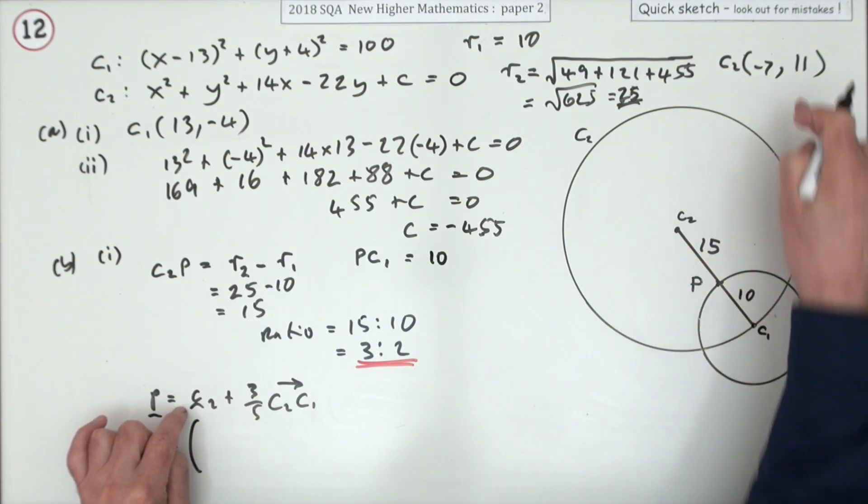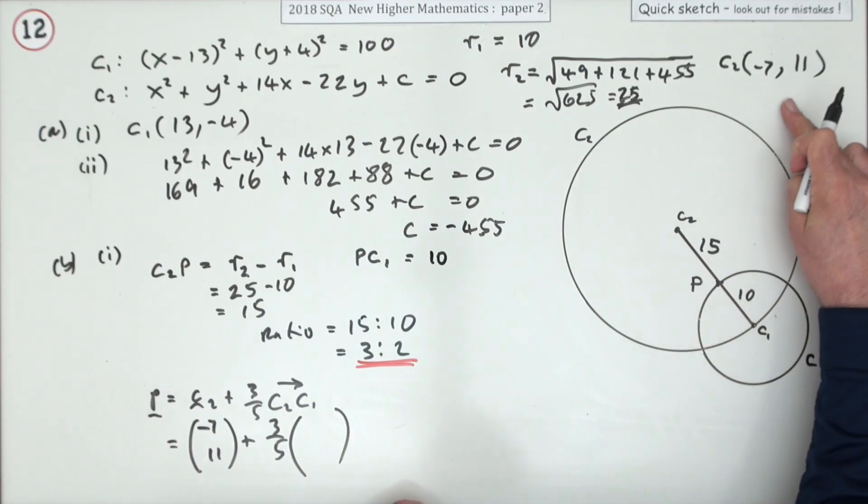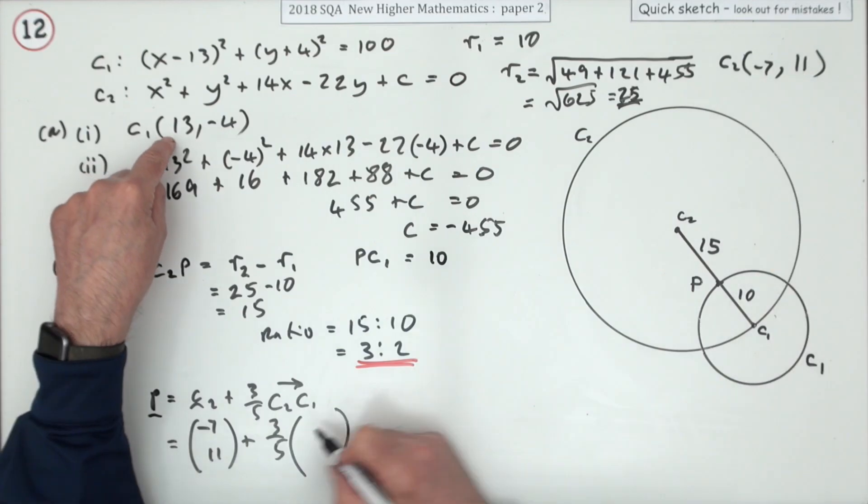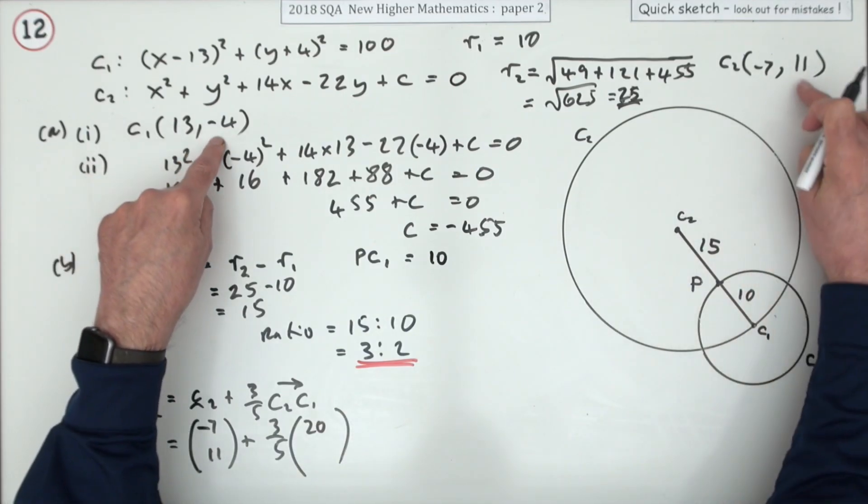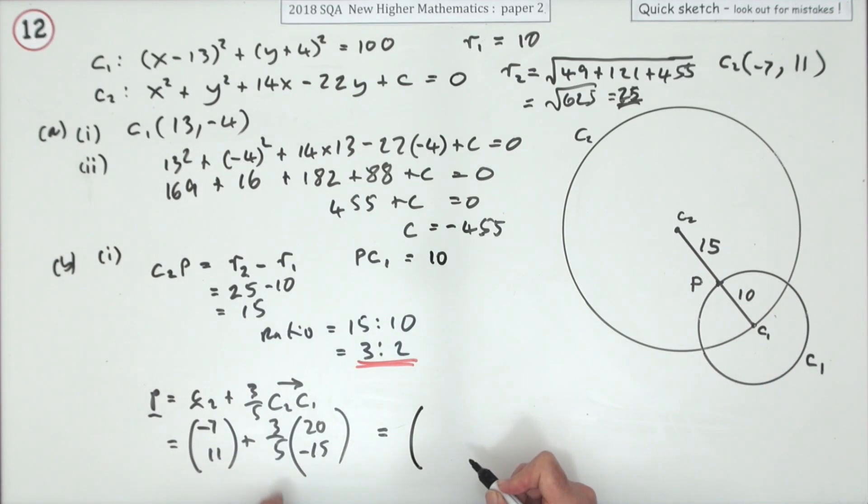I've already got the center of two up here, negative 7, 11. Three-fifths of—and I'll just quickly work out C2 to C1, which is here—negative 7 to 13 is 20. 11 to negative 4 is back 15. So that means it should be, well, three-fifths of 20 is 12, take away 7 is 5. Three-fifths of negative 15 is negative 9, with the 11 makes 2. So P is the point (5, 2).